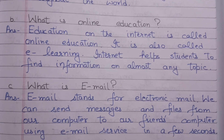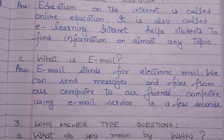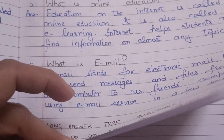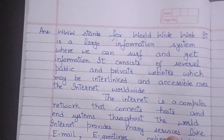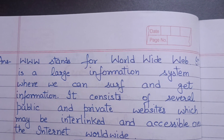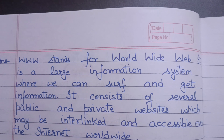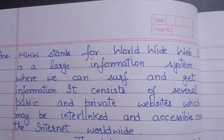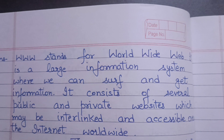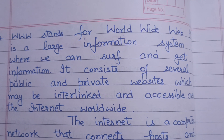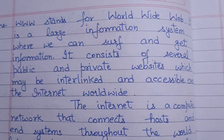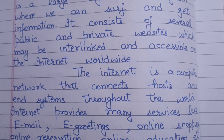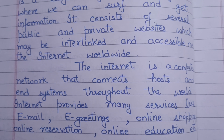Now we come to the long answer type questions. The first question is: what do you mean by WWW and how does it differ from the internet? WWW stands for World Wide Web. It is a large information system where we can serve and get information. It consists of several public and private websites which may be interlinked and accessible over the internet worldwide. The internet is a computer network that connects hosts and end systems throughout the world. Internet provides many services like email, e-greetings, online shopping, online reservation, online education, etc.